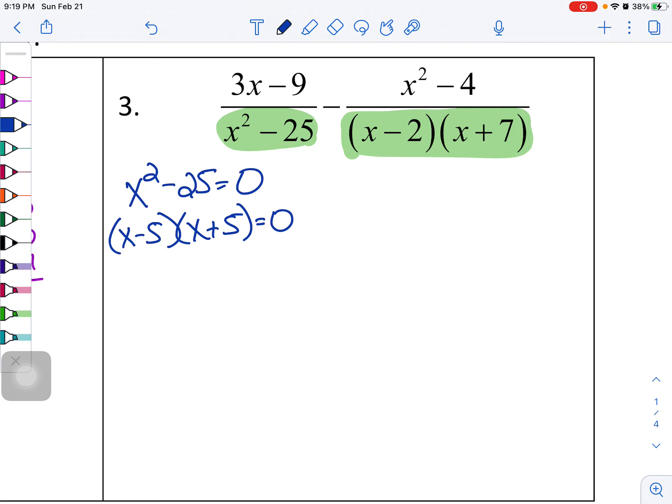I'm going to factor into x minus five, x plus five, and then set each factor equal to zero. Basically, you're going to get x equals five and x equals negative five. So that's the first two.